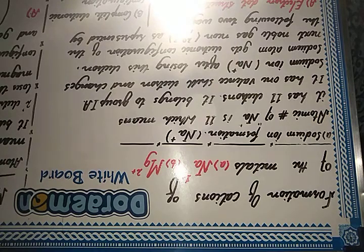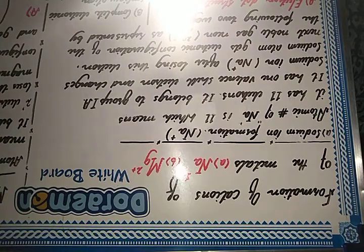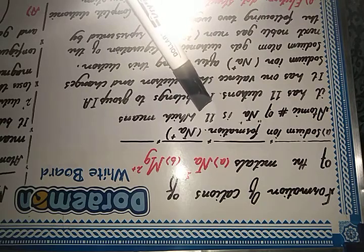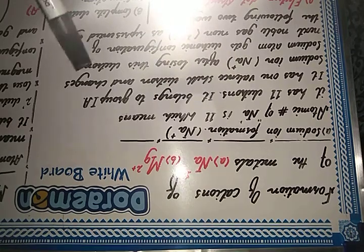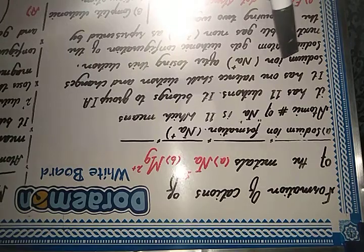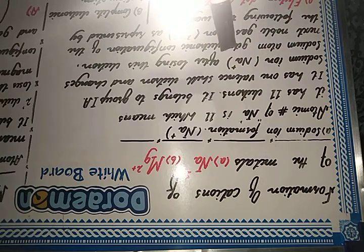Sodium's atomic number is 11, which means in the nucleus of the sodium atom you will find 11 protons, and in the surrounding shells there are 11 electrons. Sodium also has 11 neutrons. It belongs to Group 1A and has one valence shell electron, which forms its valency — just one lonely electron in the outermost shell.